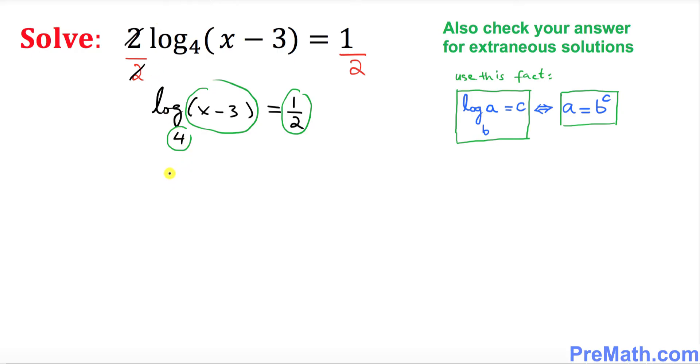So this could be written as x minus 3 equals to 4 power 1 over 2. Just I want to make sure on the right hand side 4 power 1 over 2 is same as square root of 4 isn't it? And square root of 4 is always 2.